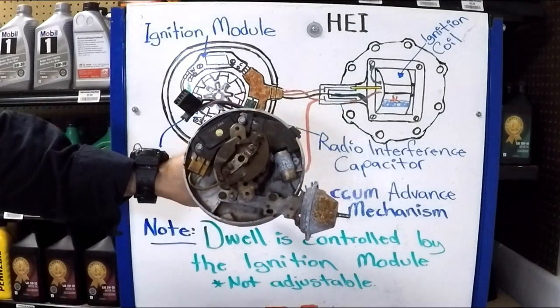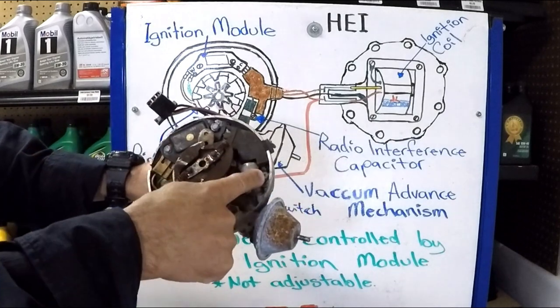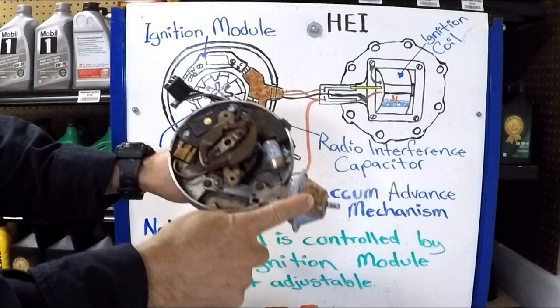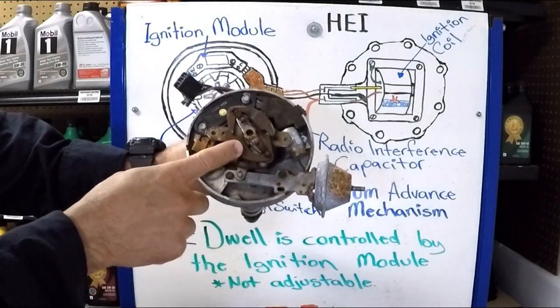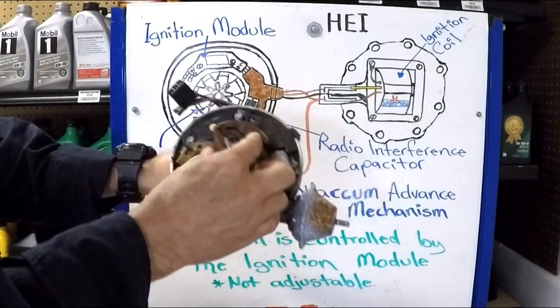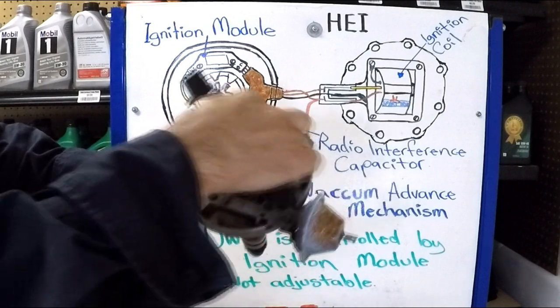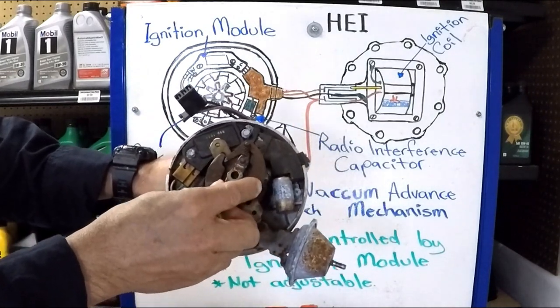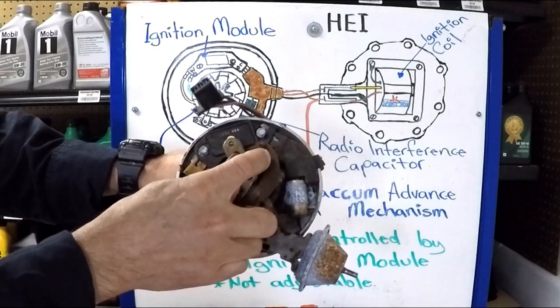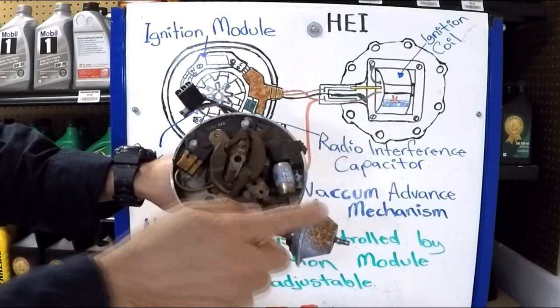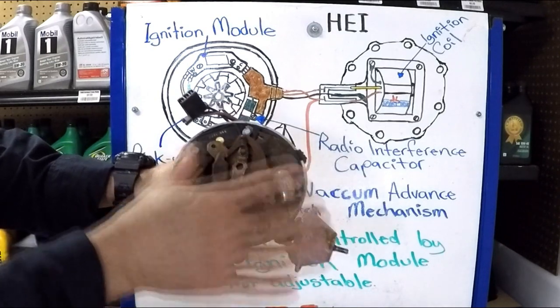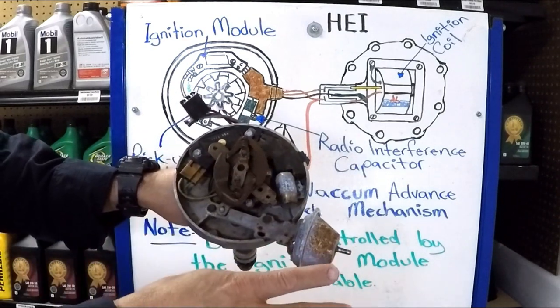This is how the distributor looks in real life right here. You have your module. You have your capacitor. This is how the pickup coil connects right there. Your vacuum advance. This is a mechanical advance. There are centrifugal weights right here. You see the springs. When the distributor shaft is rotating, the weight of them moves them and overcomes the spring pressure, and that also adjusts the timing. So the vacuum advance and the centrifugal weights adjust the ignition timing at different RPMs and different loads of the engine.